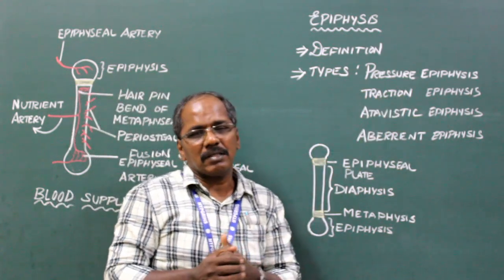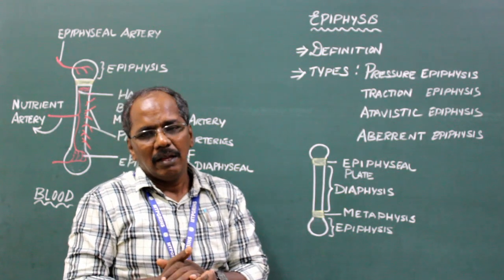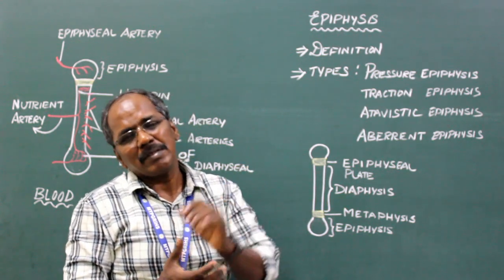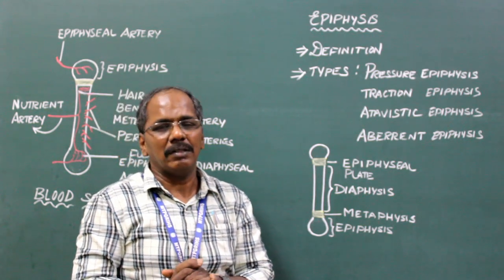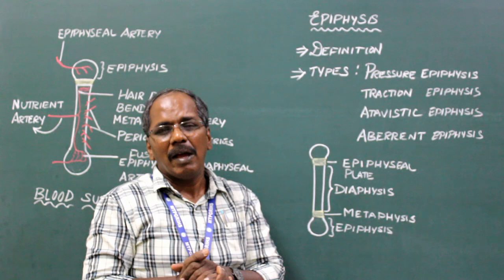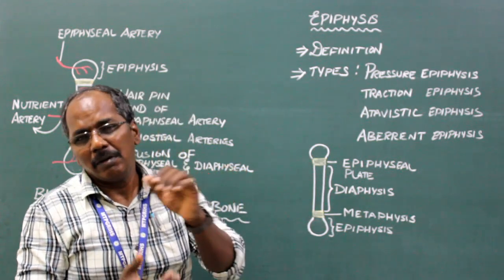Traction epiphysis does not take part in weight transmission and joint formation. Examples: trochanters of femur and tubercles of humerus.